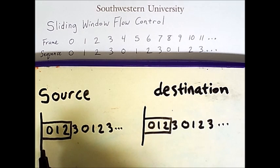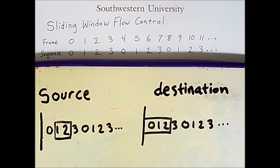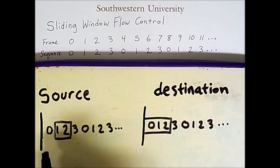So for example, let's say the source sends a frame with sequence number 0. The window got slightly smaller because a frame with sequence number 0 was sent, and the next frame for the source to send will have a sequence number of 1.